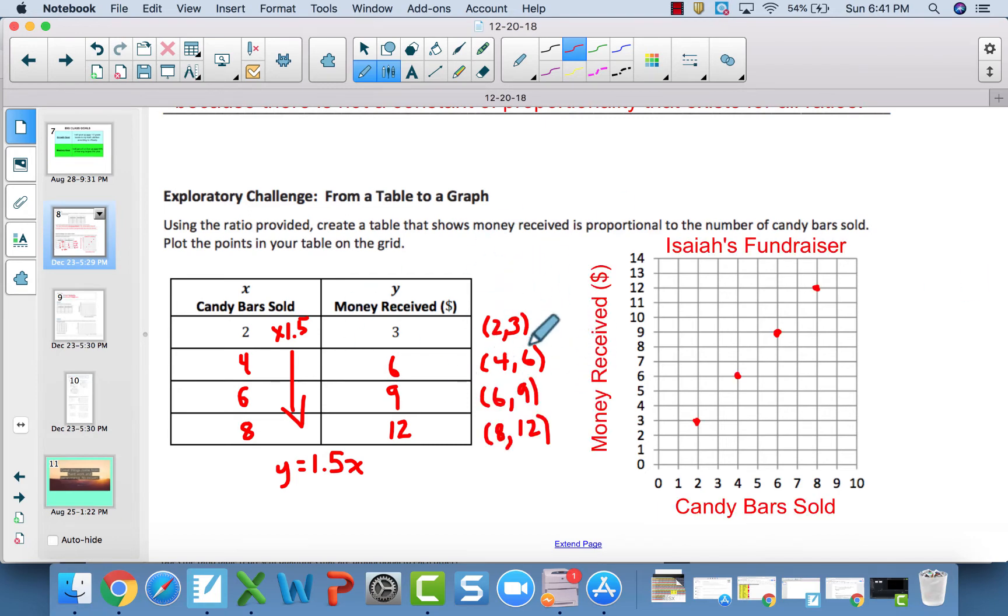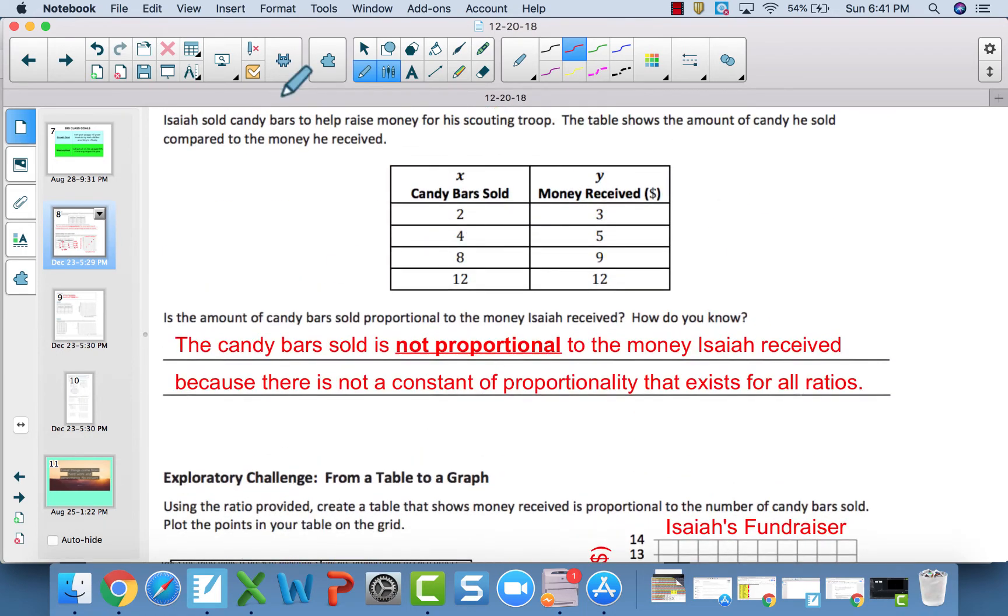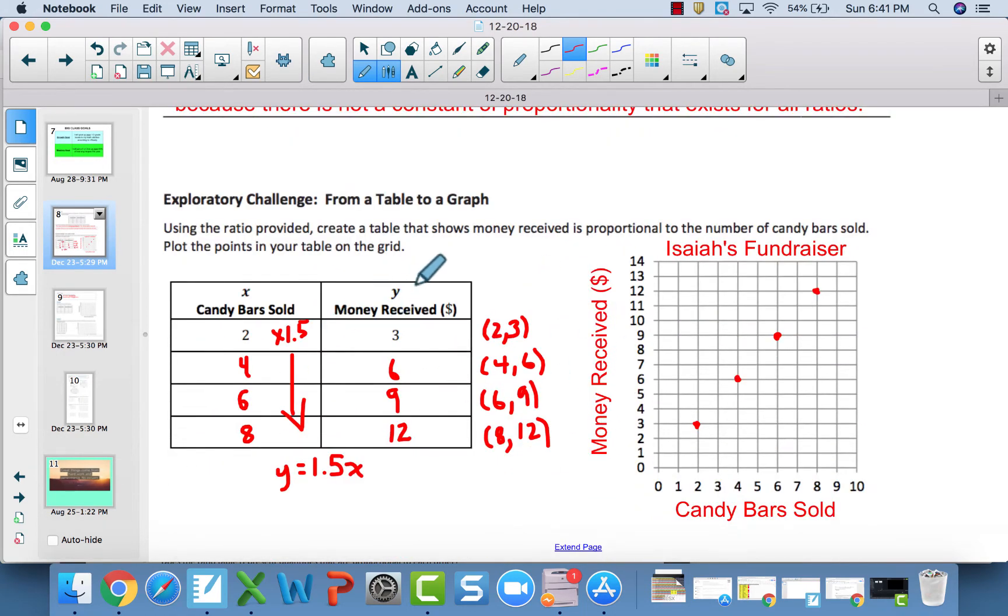What you see here on the left is I've written all my coordinate pairs out—writing them out makes it easier to graph. Notice my title: Isaiah's Fundraiser. Your y-axis should be Money Received, and your x-axis is Candy Bars Sold. Now plot the points. The first number, x, is left and right; y is vertical, up and down. So 2 tells me go over 2, then up 3.